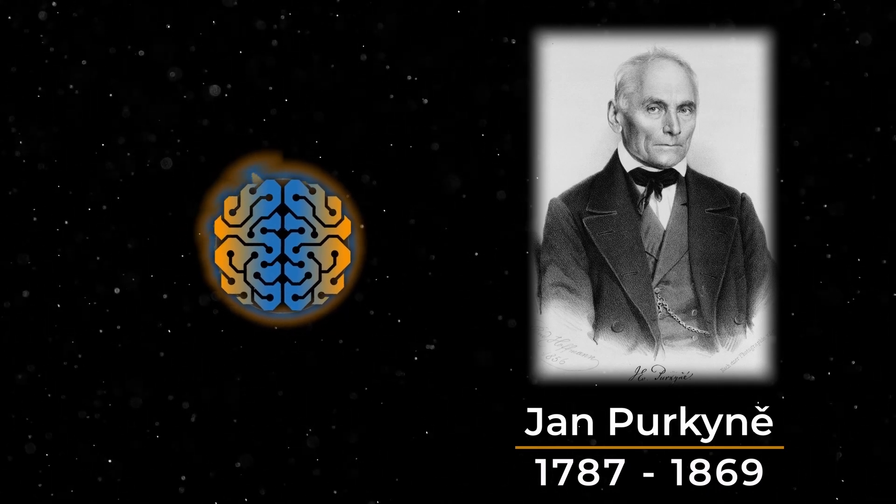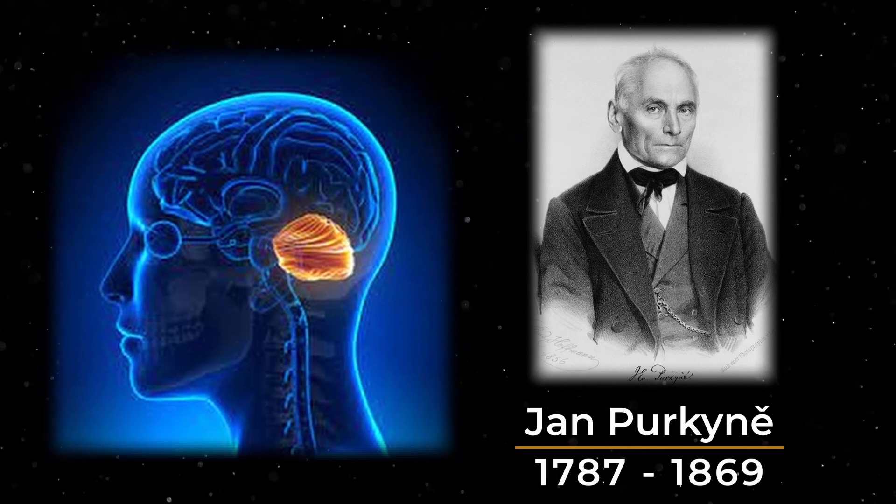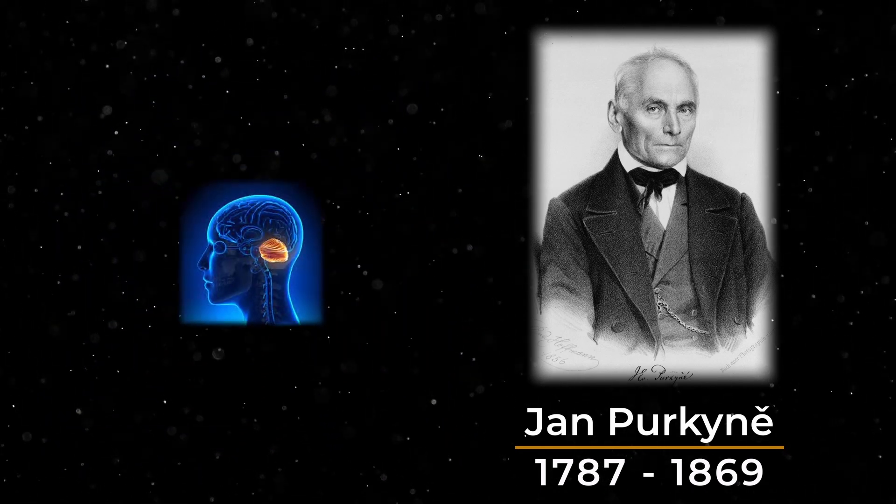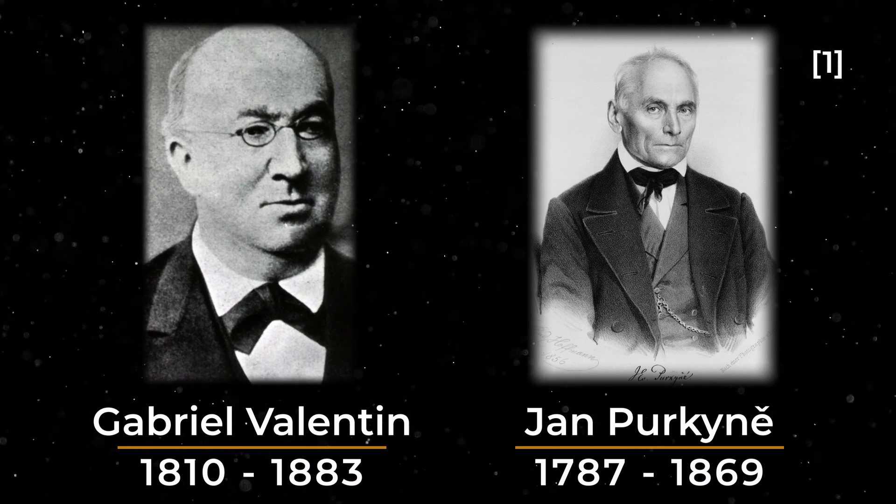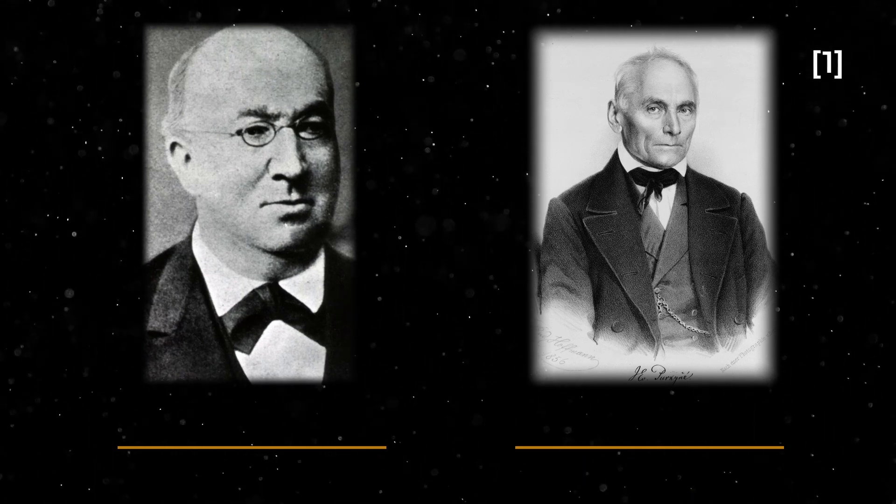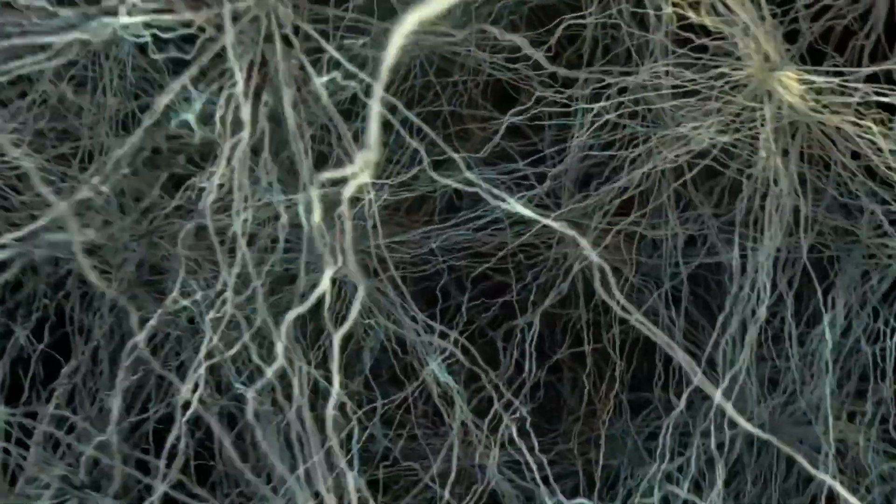When observing a layer of cells from the cerebellum, Purkinje and his student, Gabriel Valentin, observed a layer of globules, which sat on top of another layer of long fibers. The globules were neurons, and the fibers were their axons. The two scientists had become the first people ever to observe a neuron.